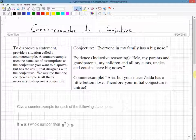This next section covers counterexamples to a conjecture. To disprove a statement, provide a situation called a counterexample. A counterexample uses the same set of assumptions as the conjecture you want to disprove, so we're not using anything different than the information that we're given, but has the result that disagrees with the conjecture.